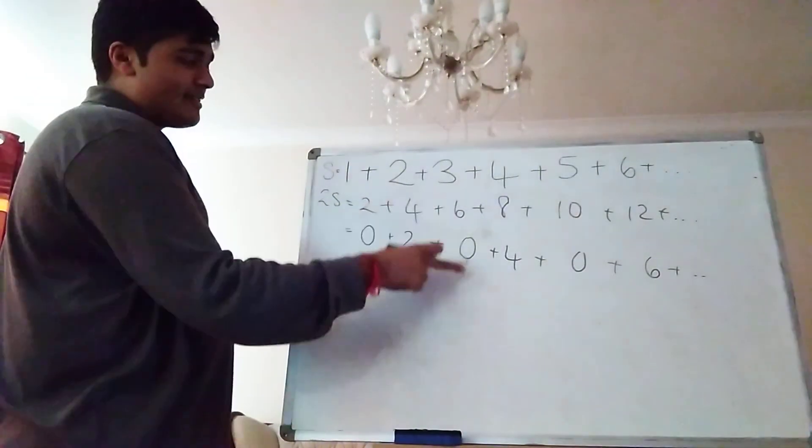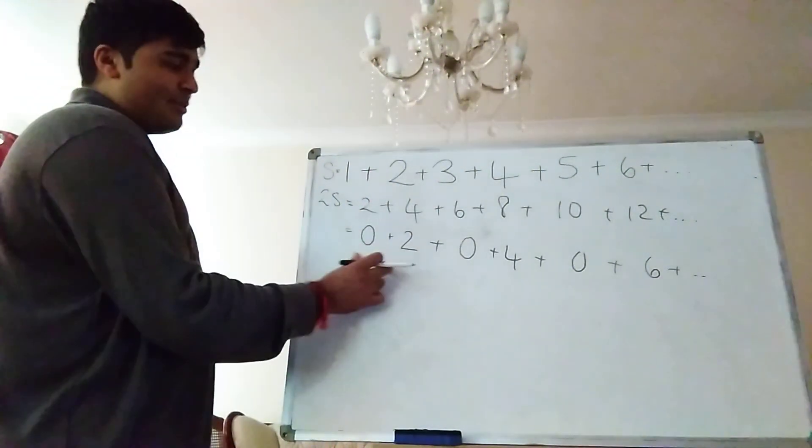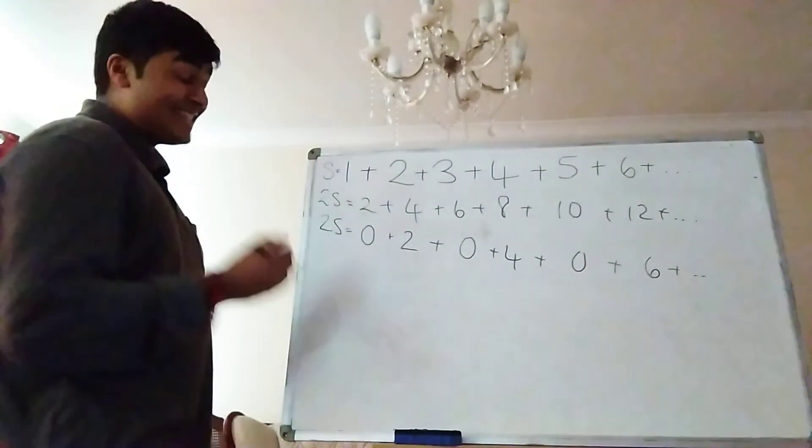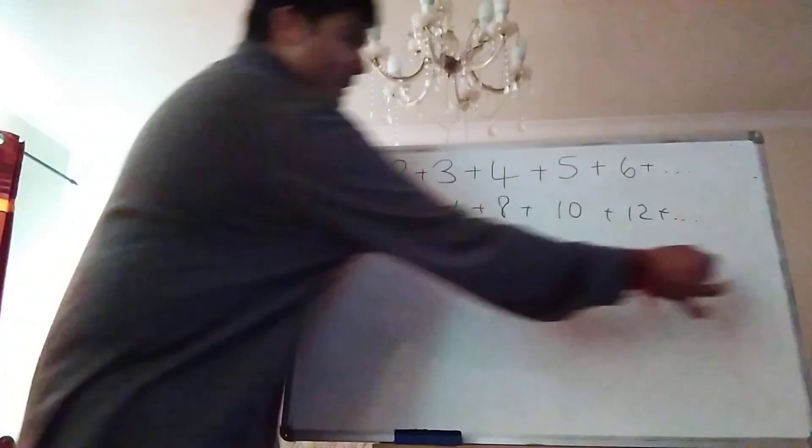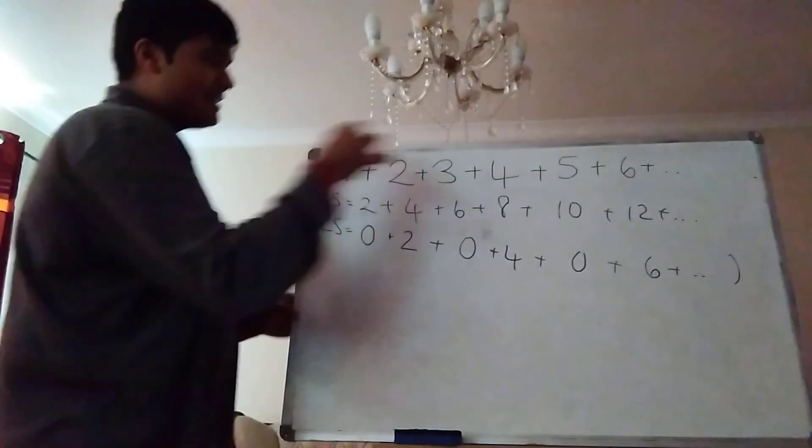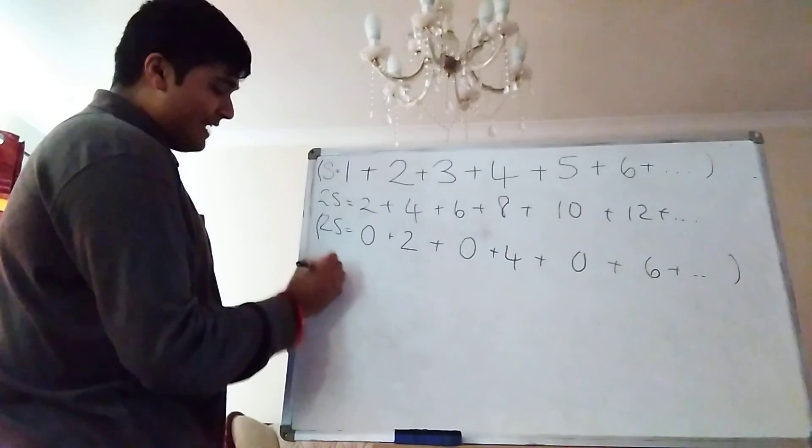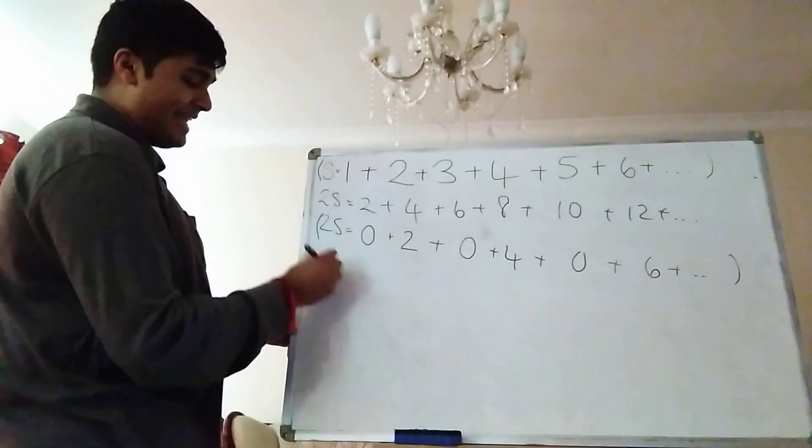So I'm copying this line onto this line, except I'm putting a zero in between each digit. And obviously the left hand side stays the same. Now I'm going to look at this equation here, and this equation here, and consider the difference of the two. I'm going to do this line minus that line. So on the left hand side, 2S minus S. That's just S.